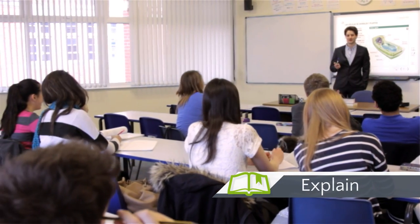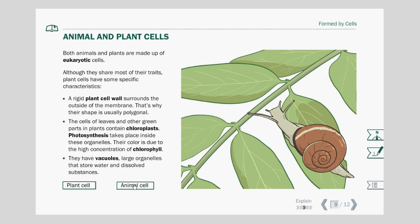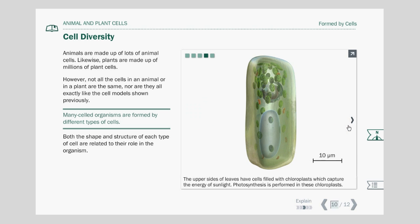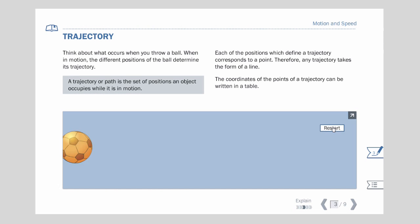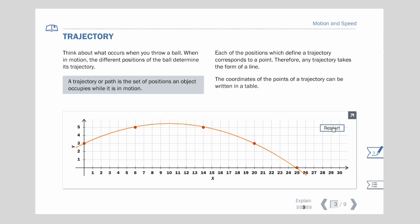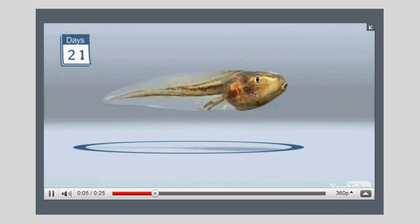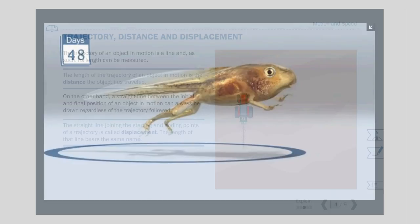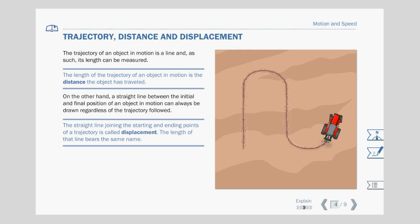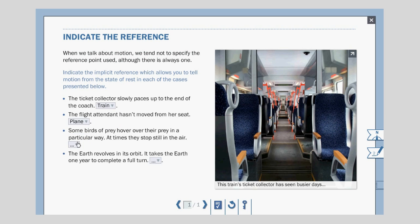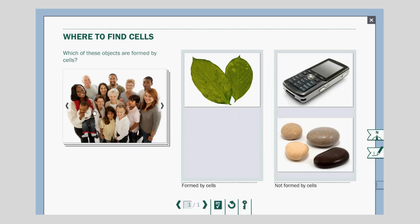Third stage: Explain. This stage involves presenting students with information they are unlikely to discover only by themselves, and allows teachers to directly introduce the ideas which have been both learned intuitively and through discovery in previous stages. To this end, Science Bits provides a wide range of multimedia learning resources which can turn the classroom into a rich audiovisual interactive experience of great educational value. Moreover, each and every one of the concepts developed in this section are accompanied by interactive exercises that aim at consolidating what has been learned by means of practice.